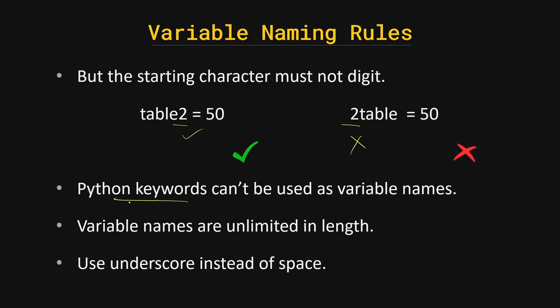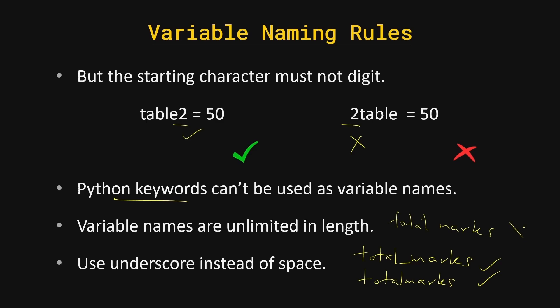You cannot use Python keywords as variable names. Variable names are unlimited in length. If you want to use spaces in variable names, use an underscore or write it as a single word — for example, 'total_mark' or 'totalmarks' are acceptable, but 'total marks' with a space is an error.